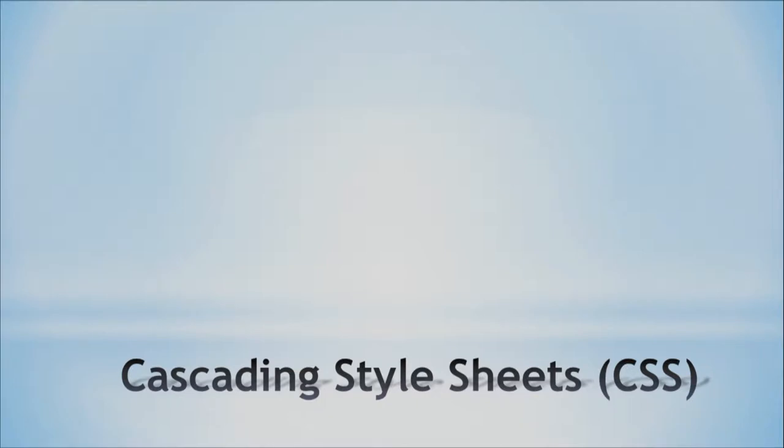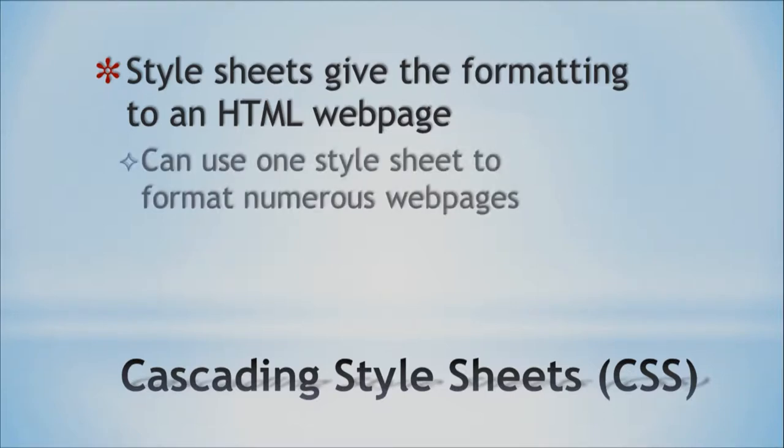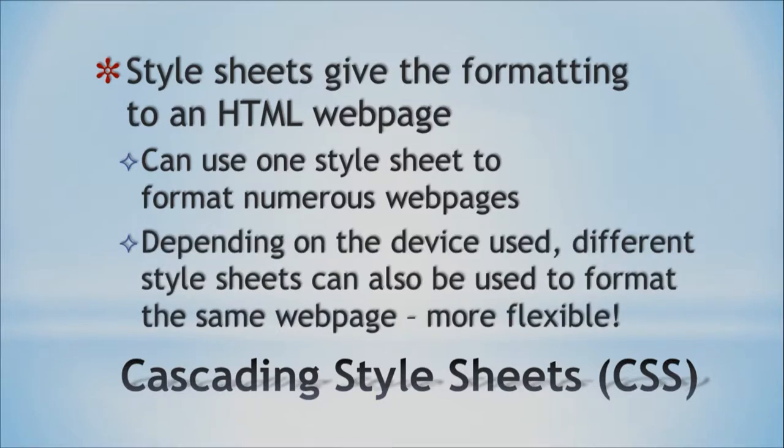Cascading Style Sheets — y'all might have heard of Style Sheets for HTML web pages. These give formatting. You got the actual web page, and then you got another page that has the formatting part. You can actually use one style sheet to format numerous or several web pages, and it's very flexible with CSS style sheets. Depending on if it's on a mobile device, a laptop, or a cell phone, it can change the display and show more or less stuff, more graphics or less. This is something besides HTML that kind of adds to that.